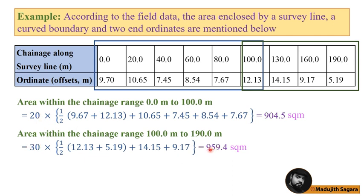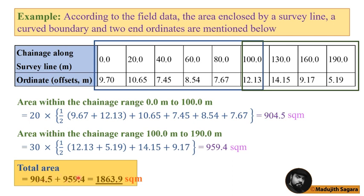And this area is 959.4. That is a very simple thing. Total area is 904.5 plus 959.4. Answer is 1863.9 square meters. That is a very easy thing. This is the trapezoidal rule. You don't need to worry now. You know what is called trapezoidal rule. Then you can calculate any area using this trapezoidal rule.